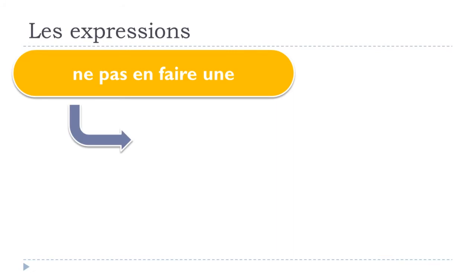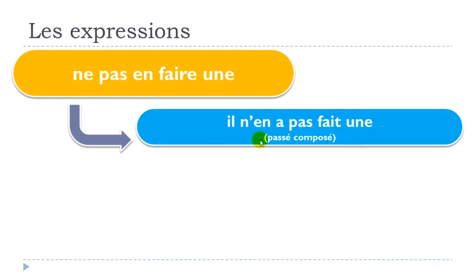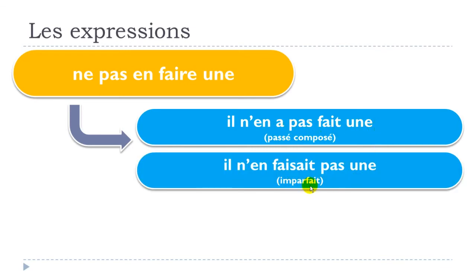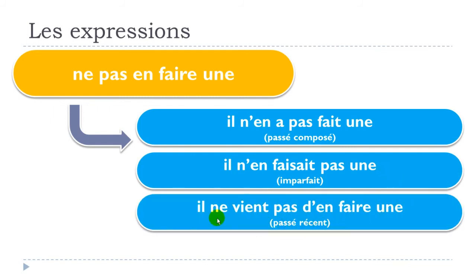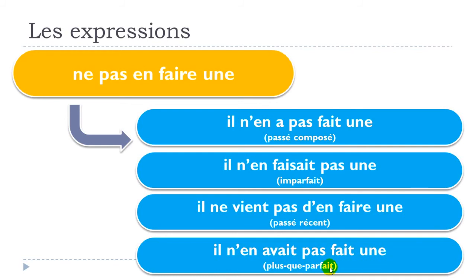Now let's see some past tenses. Passé composé: il n'en a pas fait une. Imparfait: il n'en faisait pas une. Passé récent: il ne vient pas d'en faire une. Plus-que-parfait: il n'en avait pas fait une.